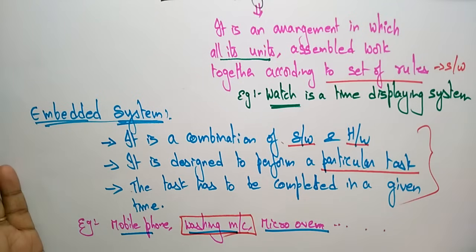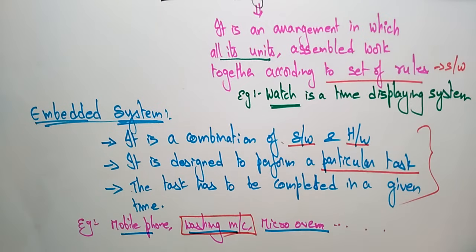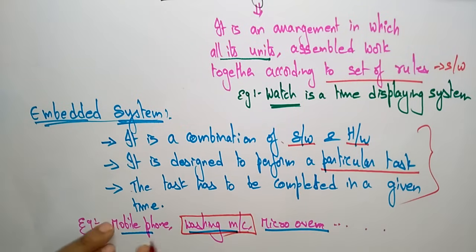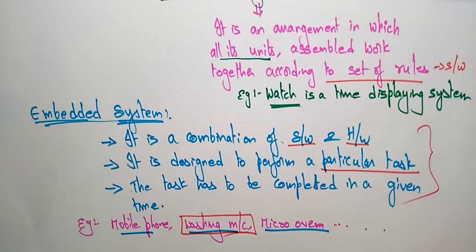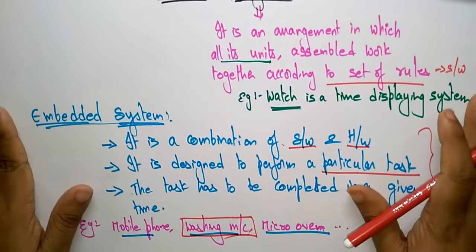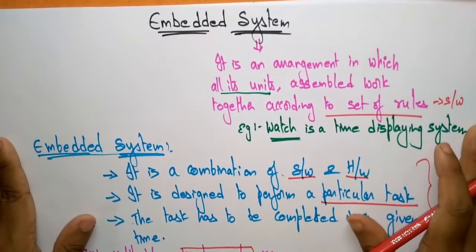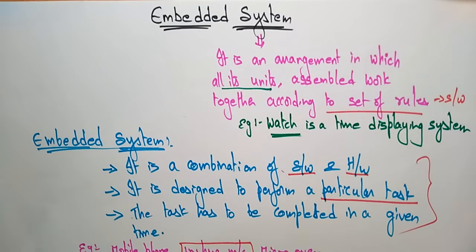Don't be confused: an embedded system is a combination of software and hardware designed to perform only a particular task. It is not like a general purpose system. Personal computers are general purpose systems — they do many things and have many components and processors. An embedded system performs only a particular task, like a washing machine, microwave oven, or mobile phone, which is used only for communication and data transfer. Whatever task is taken has to be completed in a given time — that is the deadline. That is the definition of an embedded system.